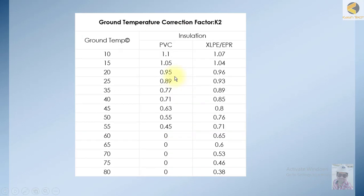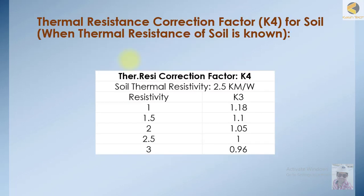Then we have the ground temperature correction factor K2. If the cable is in the ground, the derating factor is different. As the temperature increases, the derating factor is also decreasing. The heat dissipation in air is more compared to soil, so both have different rating factors.